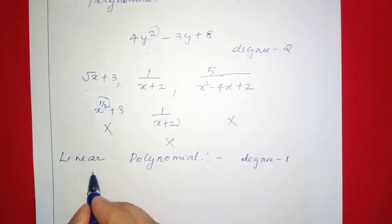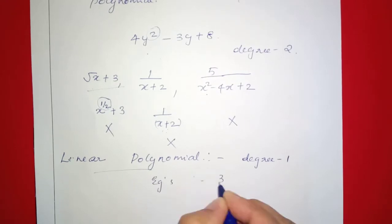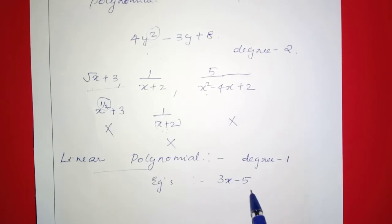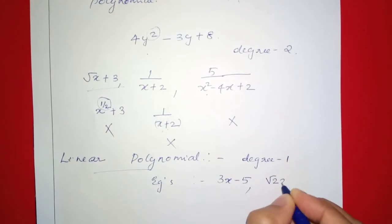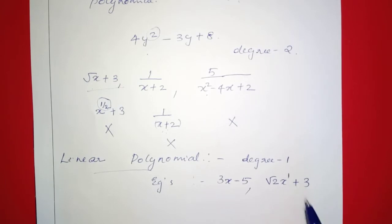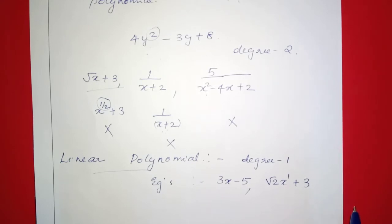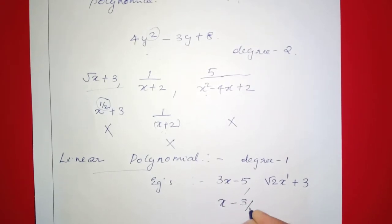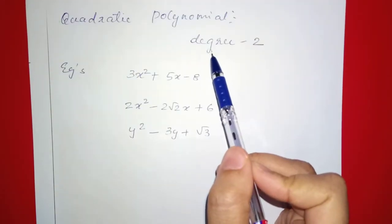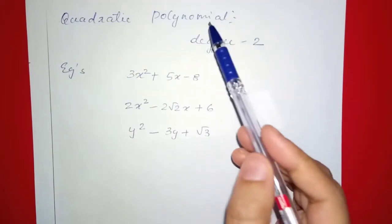We have linear polynomials in this example. 3x minus 5: the highest power of x is 1, so this is a linear polynomial. Root 2 times x plus 3: the highest power of x is 1. Also, x minus 3 by 2: the highest power of x is 1. This is a linear polynomial.